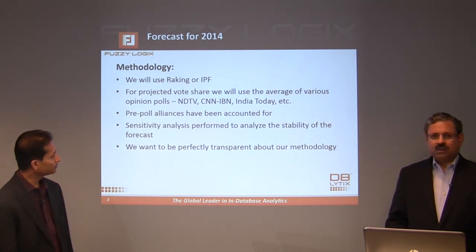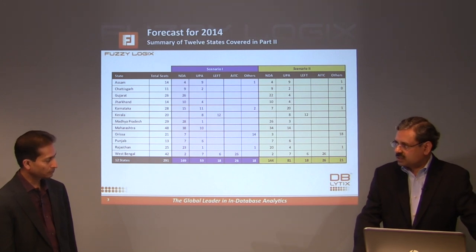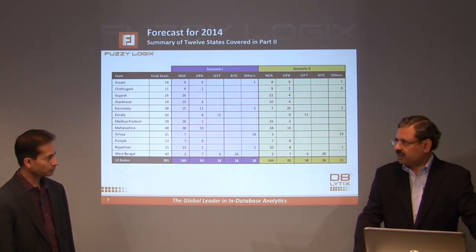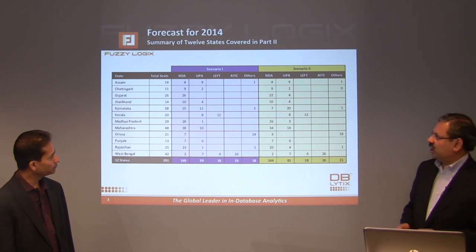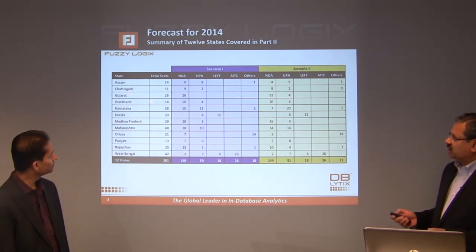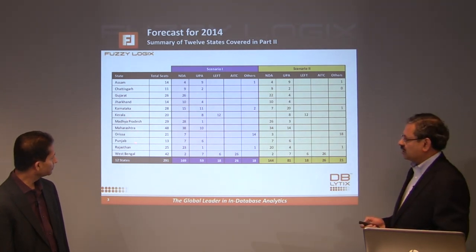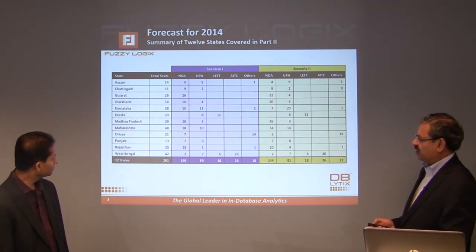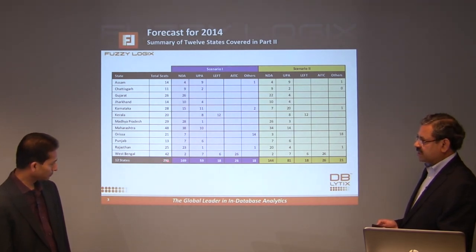Let's do a recap of the 12 states covered in Part 2: Assam, Chhattisgarh, Gujarat, Jharkhand, Karnataka, Kerala, Madhya Pradesh, Maharashtra, Odisha, Punjab, Rajasthan, and West Bengal. These 12 states cover 291 seats in total.